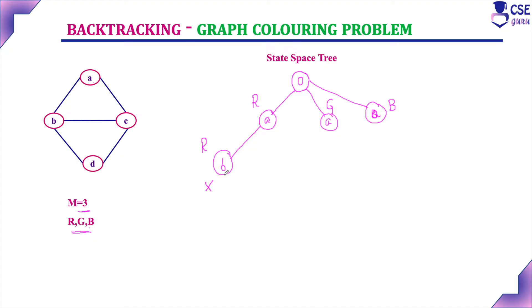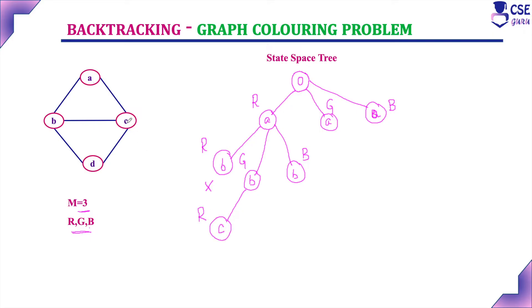For vertex B, we cannot assign red. We can assign green or blue to B. Blue is also possible because vertex A is red — if A is red, we can give green or blue to B. Suppose if we are giving green to B, next for vertex C, can I give red? No, because C is adjacent to A, and A is already assigned with red, so we cannot assign red to C.